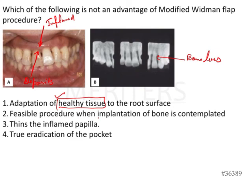Option 2 — feasible procedure when implantation of bone is contemplated. This is also correct, because if you want to perform regenerative procedures or place bone, you need direct access, which is achieved by raising the Modified Widman Flap. Option 3 — thins the inflamed papilla. This is correct as well, because removing granulation tissue and part of the flap reduces inflammation and the overall thickness of the flap.